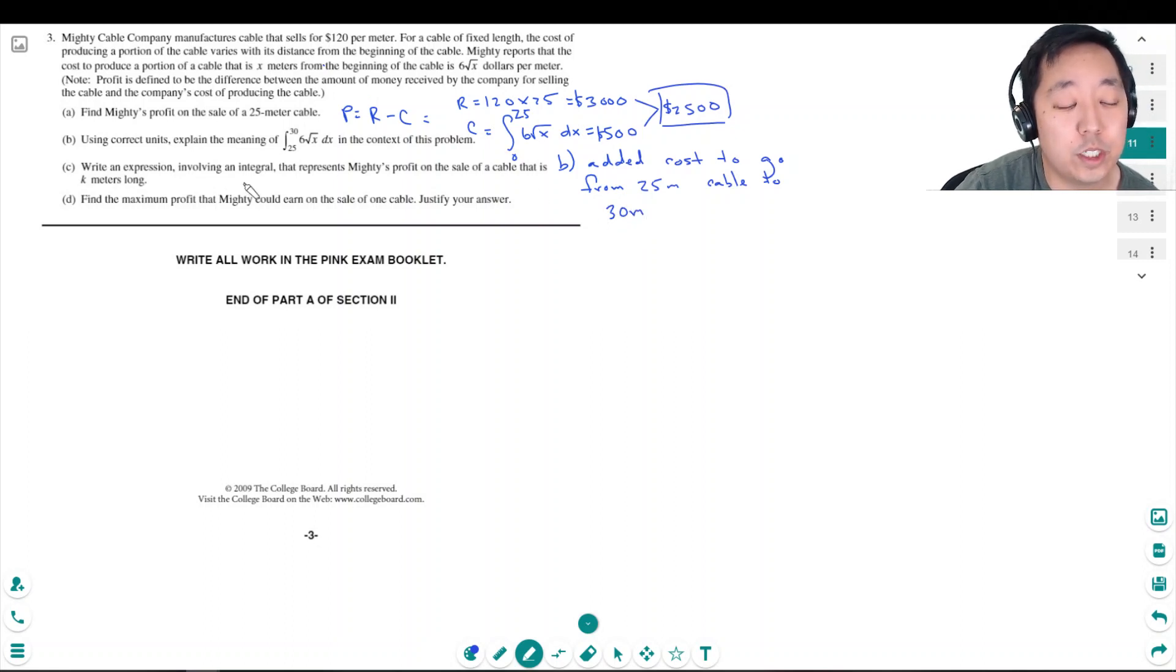Write an expression involving an integral that represents Mighty's profit in the sale of a cable that is k meters long. The profit on the sale, instead of 25 is just I plug in 120k, that's how much they sell it for, minus the cost of it, zero to k, 6√x dx. That would be the profit as a function of k.